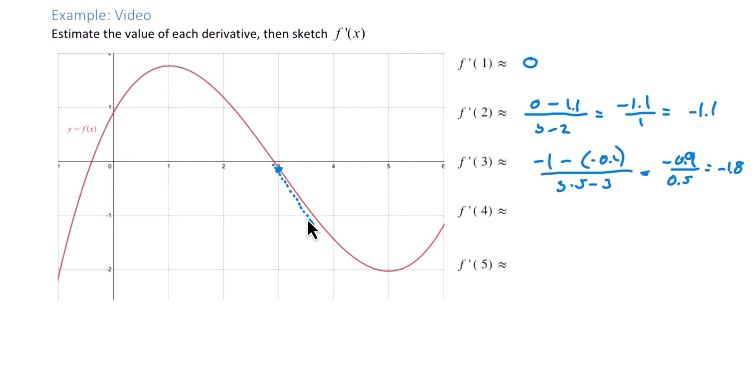Again, just estimating here. And then at 4, eyeballing that one, it looks like it's pretty close to the same as 2, the f'(2). So let's say that's roughly negative 1.1 as well.